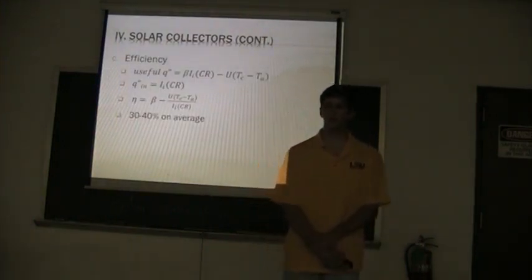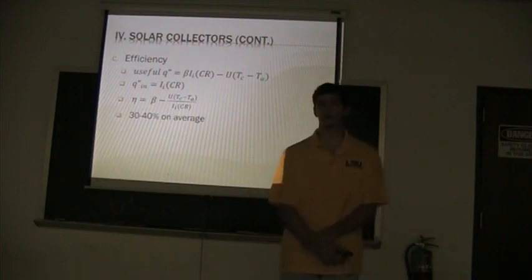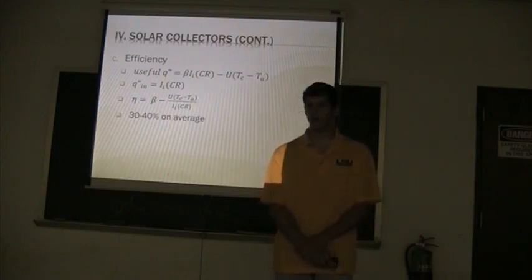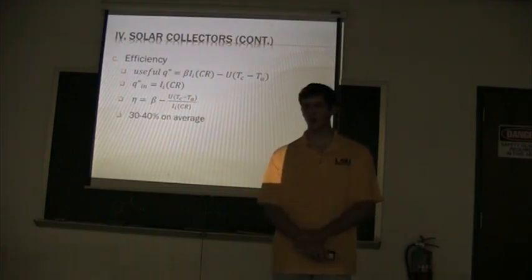The efficiency of solar collectors is determined by the ratio of the useful heat absorbed to the total heat incident upon it. The useful heat is given where beta is the overall absorbency and CR is the concentration ratio. Also, U is the overall coefficient of convection.